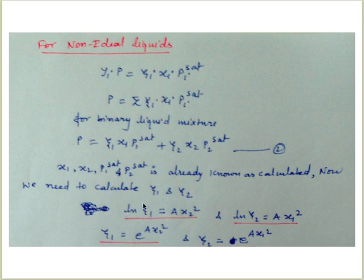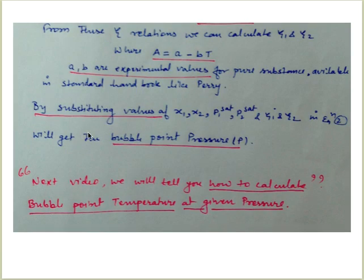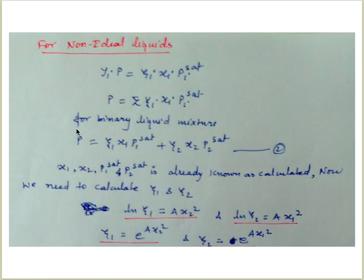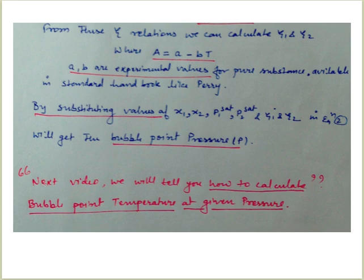For the activity coefficient, we use: ln(gamma1) = A*x2² and ln(gamma2) = A*x1², so gamma1 = e^(A*x2²) and gamma2 = e^(A*x1²). The constant A is calculated as A = a - bT, where a and b are experimental constants available in data books like Perry's for pure components. By substituting x1, x2, P1_sat, P2_sat, gamma1, and gamma2 into the non-ideal equation, you obtain the bubble point pressure for a non-ideal liquid.